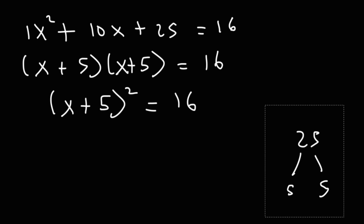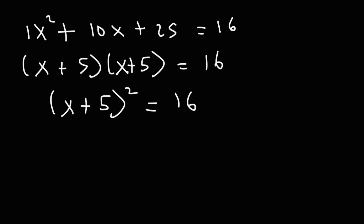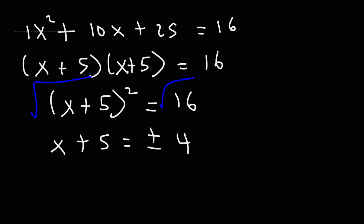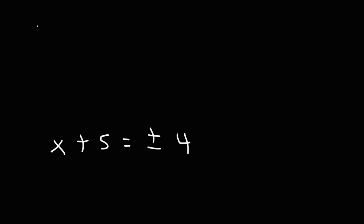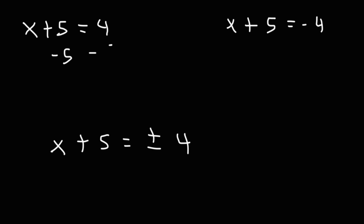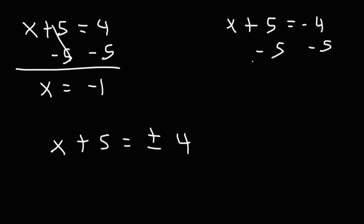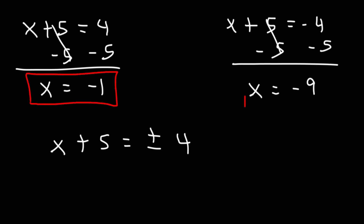Now it's similar to the other problems we've been working on. We take the square root of both sides, giving x plus 5 equals plus or minus the square root of 16, which is 4. We break this into two equations: x plus 5 equals 4, and x plus 5 equals negative 4. Subtracting 5 from both sides: 4 minus 5 is negative 1, and negative 4 minus 5 is negative 9. So x equals negative 1 and x equals negative 9.